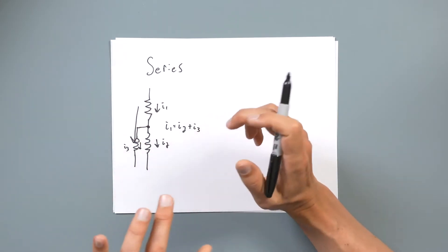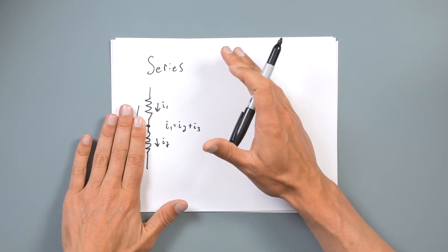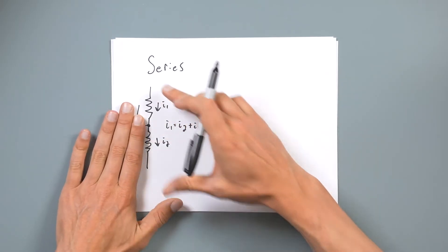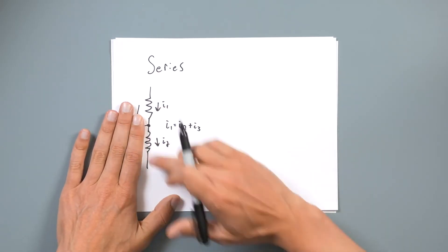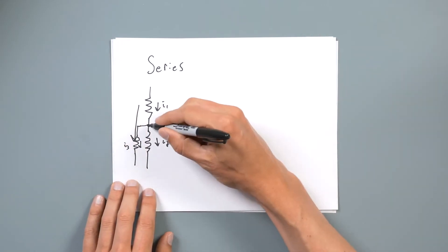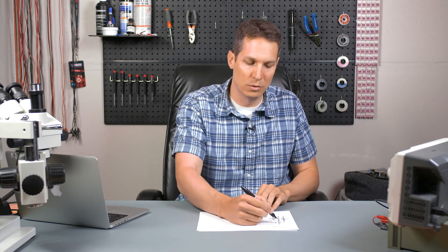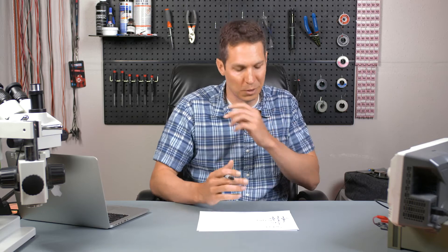Now it can get a little more complicated. Let's say we had another resistor pulled out here — then this resistor is in series with these two resistors. If that's I3, then we'd know that I1 equals I2 plus I3. That's obviously very important because it's going to be fundamental in our circuit analysis. But the simplest and most important thing to remember is that series elements share a node exclusively, and the current through one element equals the current through the other.